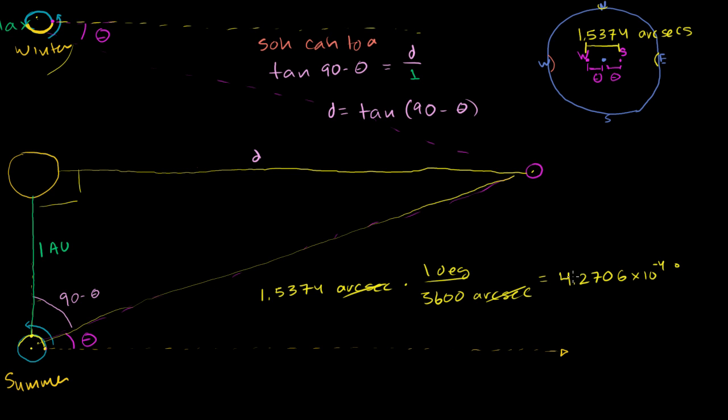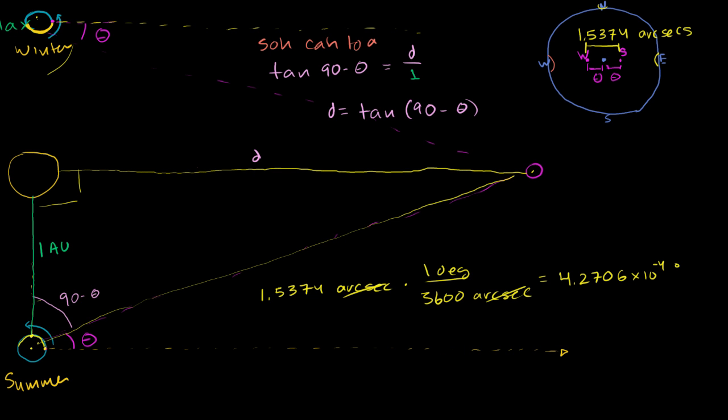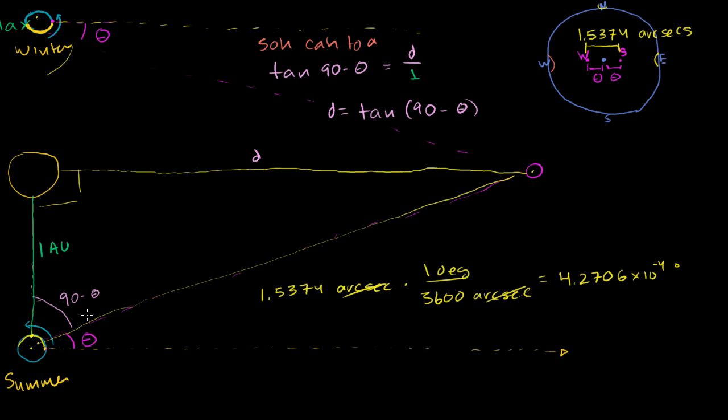This is the total angle. This angle that we care about is going to be half of this. So we could divide this by 2. So let me just do our significant digits. 4.2706 divided by 2, or I could even say times 10 to the negative 4, divided by 2 is going to be 2.1353 times 10 to the negative 4. So that's this angle right over here.